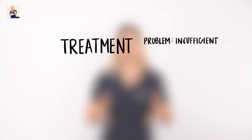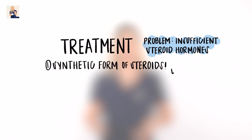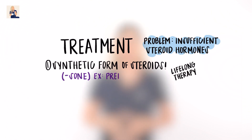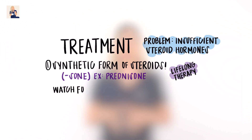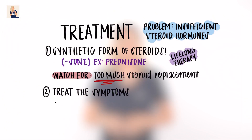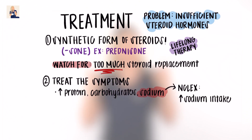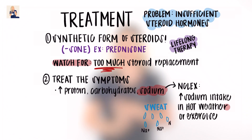Once diagnosed with Addison's disease, the treatment is straightforward: the body isn't producing enough steroid hormones, so a synthetic form should be given — lifelong steroid therapy with medications ending in '-sone.' Steroid replacement can be tricky, so watch for too much or too little replacement. We also want to treat symptoms: since Addison is extremely skinny and weak, we encourage increased intake of proteins, carbs, and sodium. NCLEX tip: teach the patient to increase sodium intake in hot weather and after exercise.